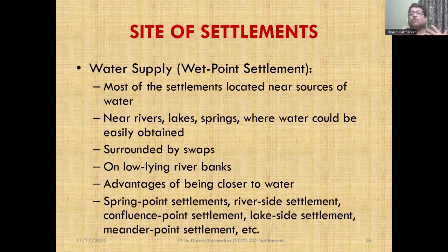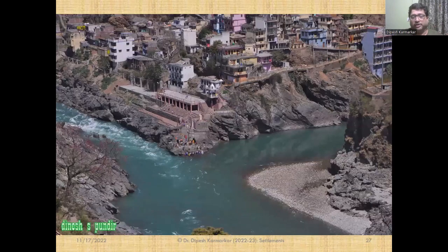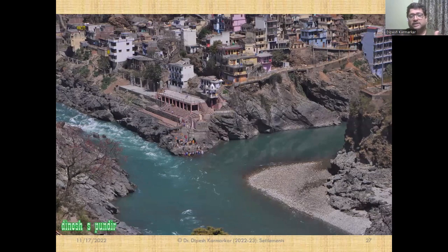Depending upon what kind of water body it is — for example, if it is a lake, we call it a lakeside settlement; if it is a spring, we call it a spring point settlement; if it is a river, then a riverside settlement. All these are different expressions of a wet point settlement. The biggest advantage of a wet point settlement is proximity to the water body. Where you can see two rivers meeting each other, we observe a settlement nearby. Such settlements are called confluence point settlements, because two rivers are meeting and at that point a settlement is located.